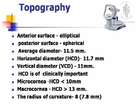Coming to the topography, the anterior surface of the cornea is elliptical and the posterior surface is spherical. The average diameter is 11.5 mm, horizontal being 11.7 mm and vertical 11 mm. Horizontal diameter is of clinical importance: if it is less than 10 mm, we call it microcornea; if more than 13 mm, we call it megalocornea or macrocornea. The radius of curvature is 7.8 mm.